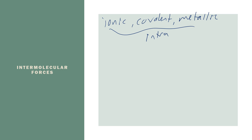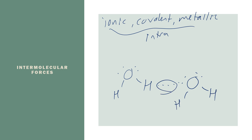Intermolecular forces are between compounds. So intermolecular forces would be if you had two separate molecules — let's just use water as a simple example. If that water molecule is interacting with another water molecule, this would be the intermolecular force. Solid lines indicate intramolecular forces, in this case covalent bonds, but we use dashed or dotted lines to represent intermolecular forces.